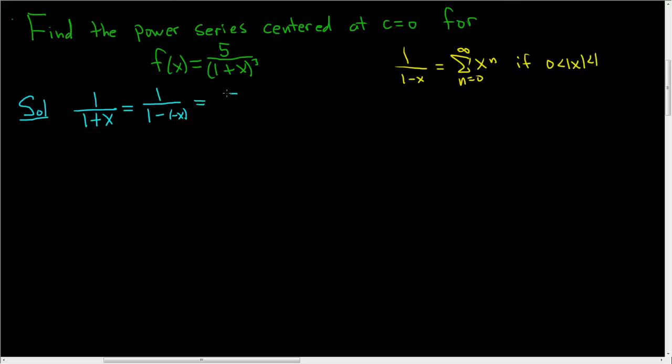So this can be written as the sum as n runs from 0 to infinity of negative x to the n, which is equal to the sum as n runs from 0 to infinity of negative 1 to the n x to the n. So we went kind of fast, so let me explain what we did. This equality is true because we took negative x and we plugged it in here. So we got negative x to the n-th power. Now how did we go from this to this? Well negative x to the n can be written as negative 1 times x to the n. And properties of exponents allow us to write this as negative 1 to the n times x to the n. Very powerful, useful stuff.